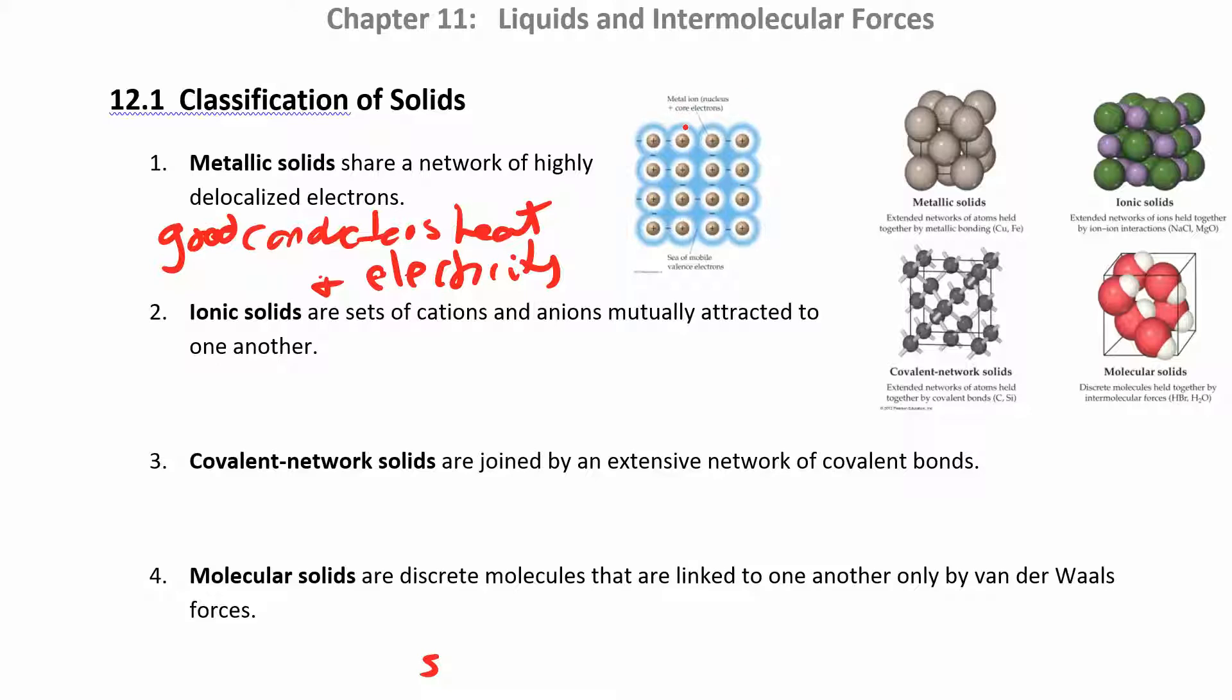Whereas ionic solids, you have cations and anions. You might have a cation, anion, cation, anion, and then anion, cation, anion, cation, and so forth. You have all this, you know, pluses and minuses all over the place. Now what happens with these guys is they're really brittle. So this is something like salt, right? Like sodium chloride, NaCl.